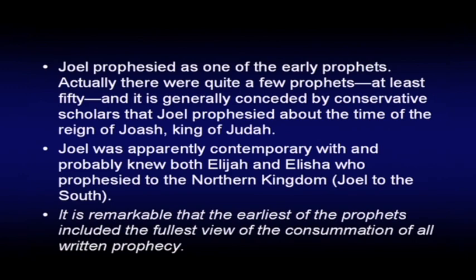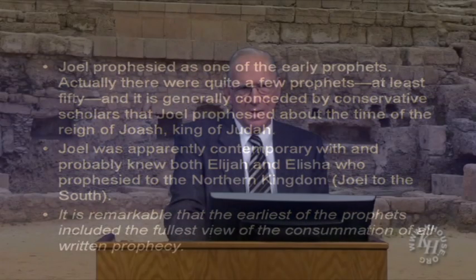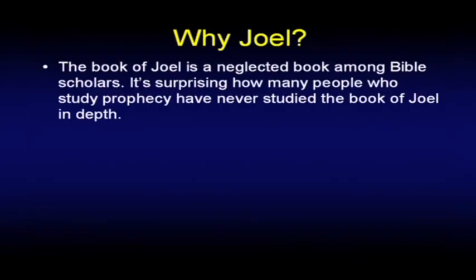It's remarkable that the earliest of the prophets included the fullest view of the consummation of all written prophecy. Here's Joel, who was probably one of the earliest writing prophets — Elisha and Elijah didn't really write themselves, so they're not considered writing prophets. And yet, even though it's a small little book, it has the fullest view of the consummation of all written prophecy. The book of Joel is a neglected book among Bible scholars. It's surprising how many people study prophecy who have never studied the book of Joel in depth.